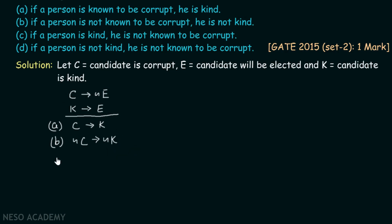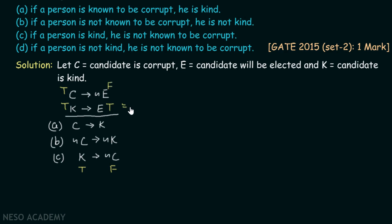Option C: if a person is kind, he is not known to be corrupt (K → ¬C). Let K be true and ¬C be false — so C is true. With K true, premise S2 forces E to be true, making ¬E false. This makes premise S1 (C → ¬E) false, since C is true but ¬E is false. We cannot make all premises true and the conclusion false simultaneously. Therefore, option C is the correct answer.